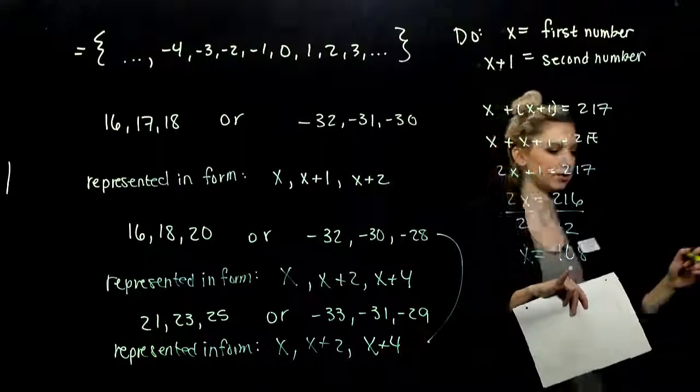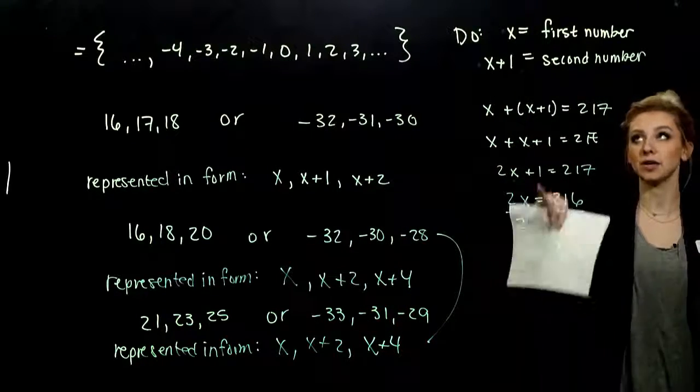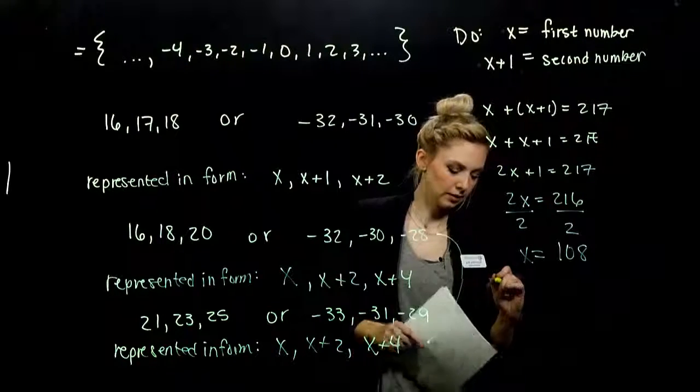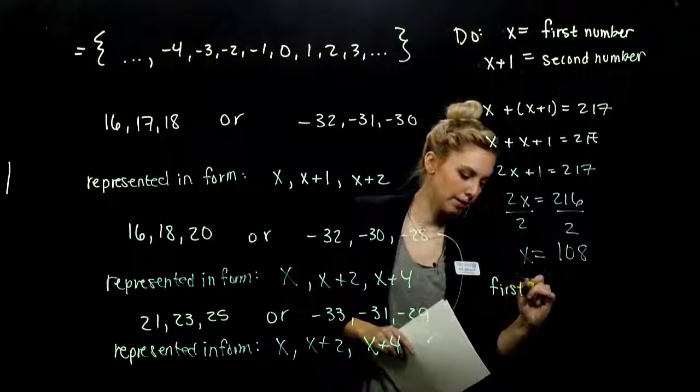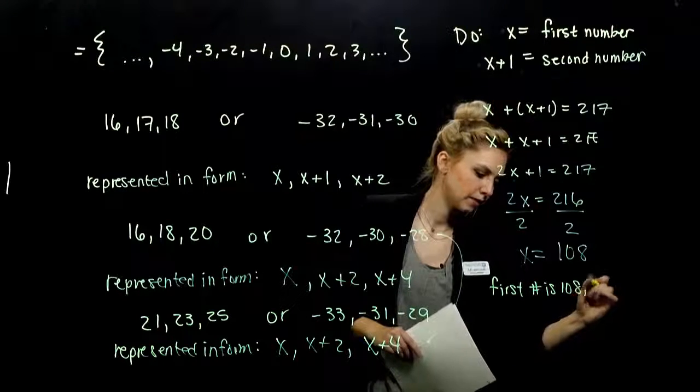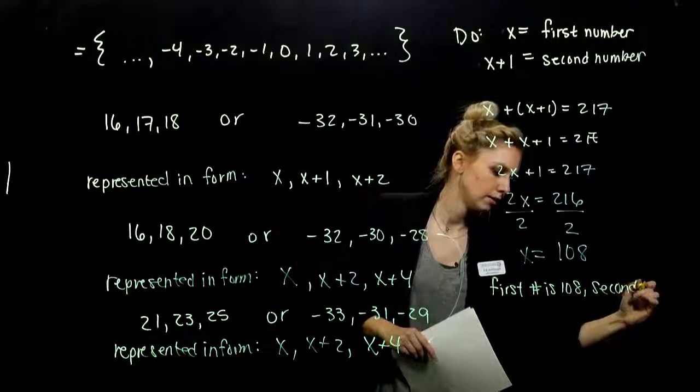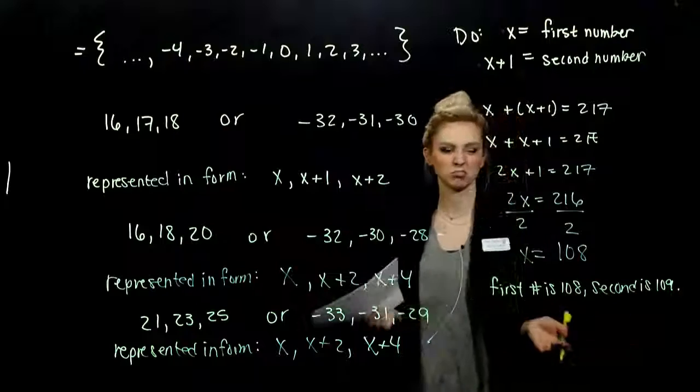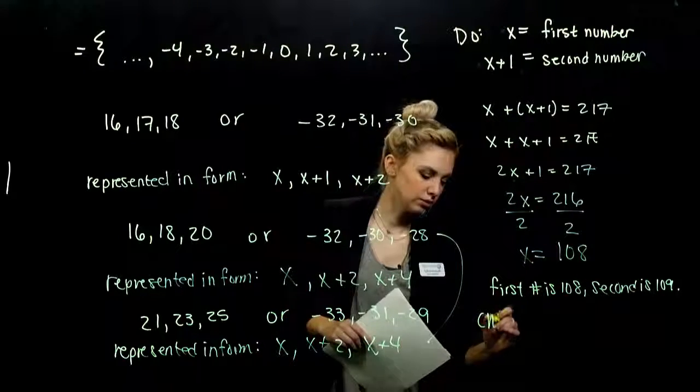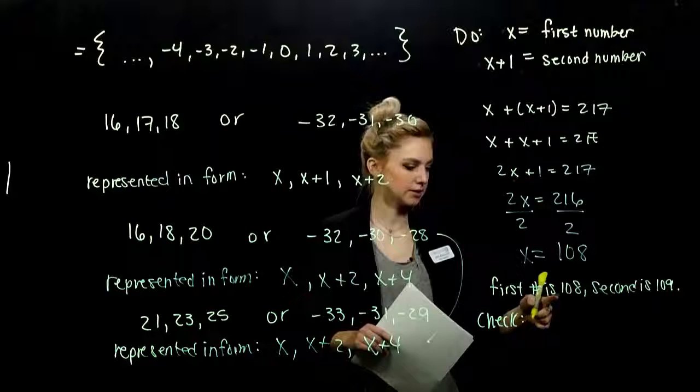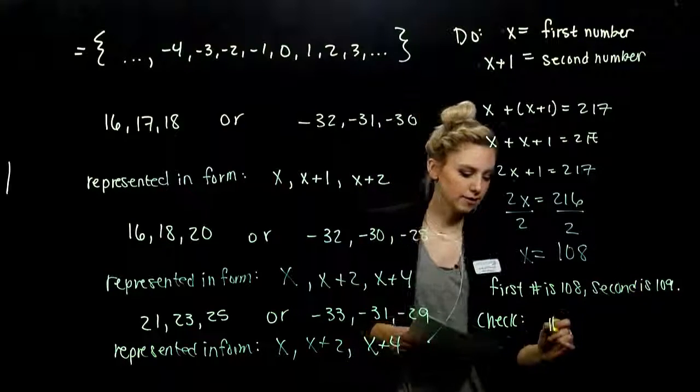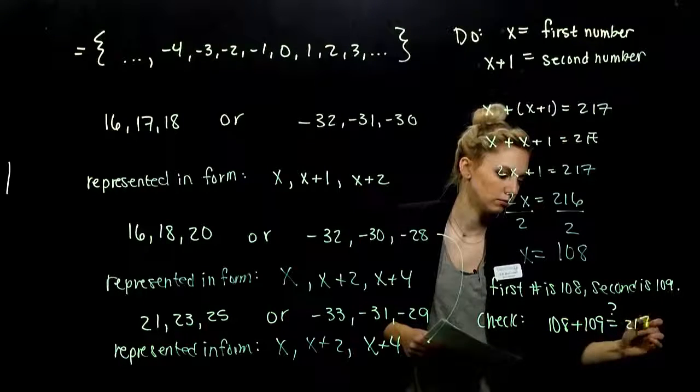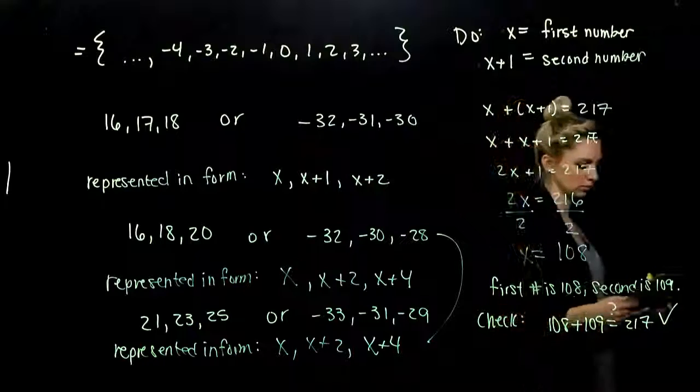So if the first number is 108, since we let x be the first number, then right next door is 109. So the first number is 108. Second is 109. If you weren't sure, how could you check? What could you do? Check and make sure. Are they consecutive? Are they right next to each other? Yes. And if I add them together, does it really give me 217? And it does.